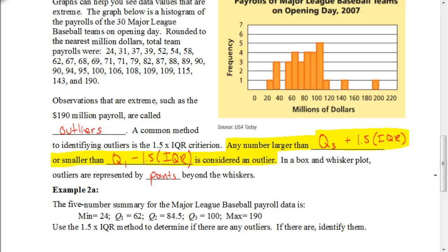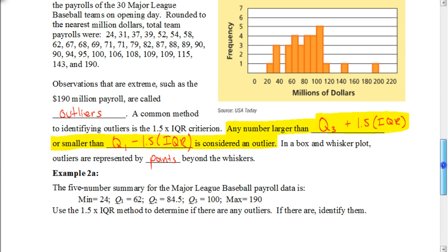Let's look at the five number summary they've given us. The minimum value is 24, the maximum value is 190. We're going to use the one and a half times the IQR method to determine if there are any outliers and identify them.